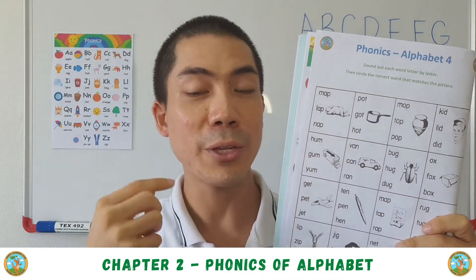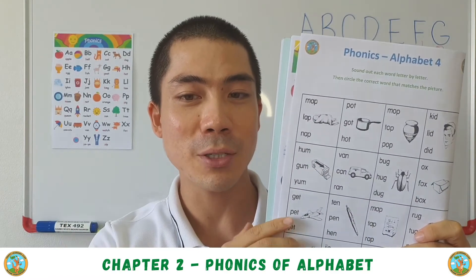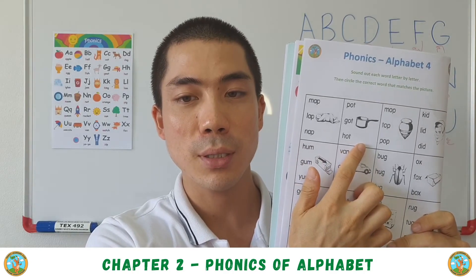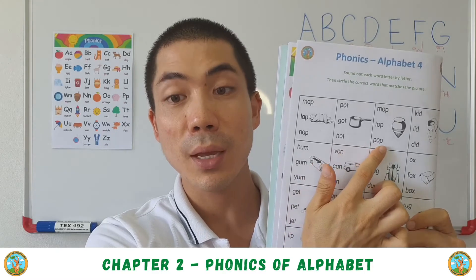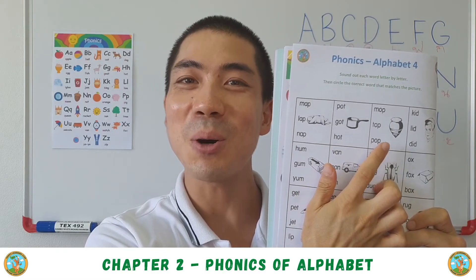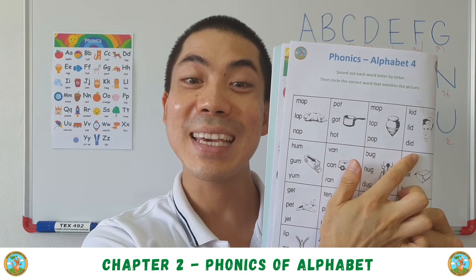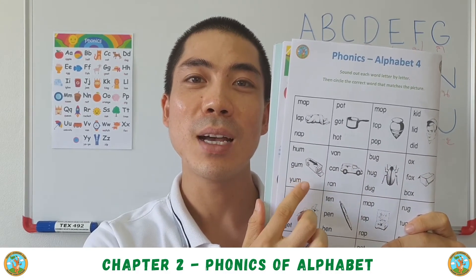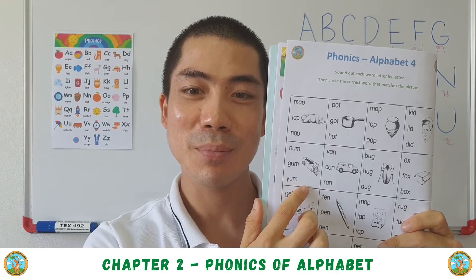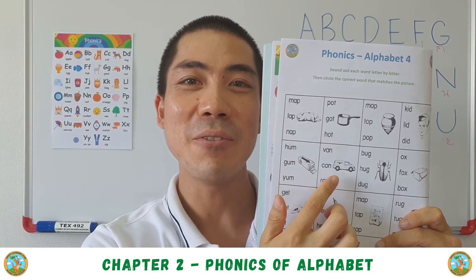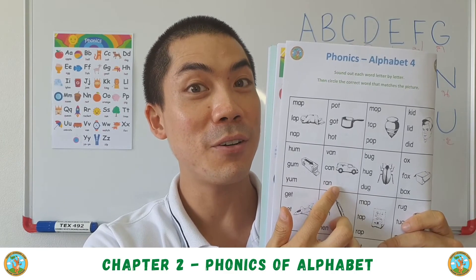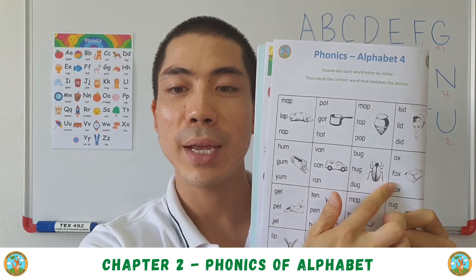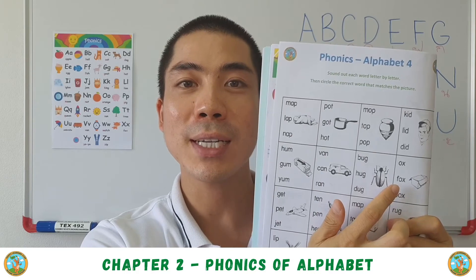Try to sound out the words by yourself and then circle the correct answer. This one is testing our consonant sounds. Pot — p-o-t, pot. Top — t-o-t, top. Kid — k-i-d, kid. Gum — g-a-m, gum. Van — v-an, van. Bug — b-a-g, bug. And then box — b-o-x, box.